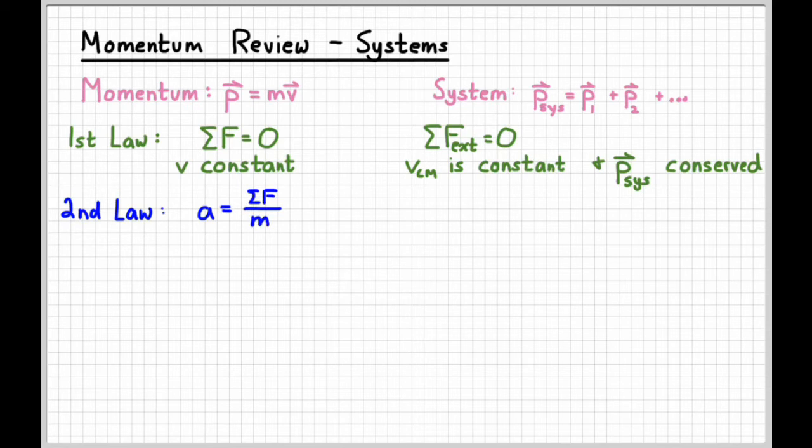Newton's second law, we took acceleration equals net force over mass, and we did a little bit of algebra to it to get the momentum impulse theorem, which is that impulse or F Δt is equal to the change in momentum. And of course, we can also find the impulse by finding the area under a force versus time graph.